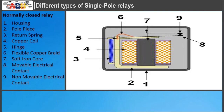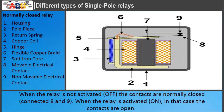Normally closed relay: when the relay is not activated the contacts are normally closed — connected 8 and 9. When the relay is activated, the contacts are open.